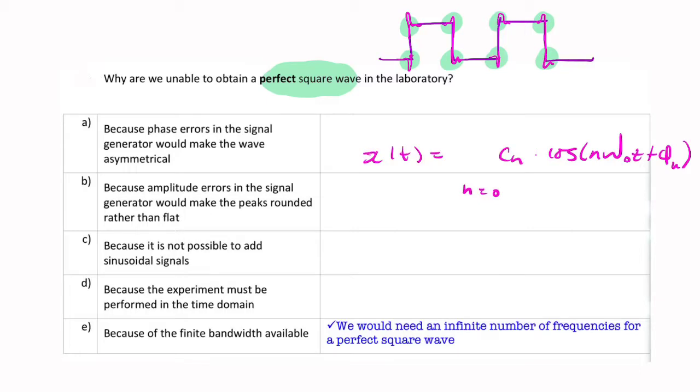The key thing here is we need an infinite number. So if we're limited, if we only have a finite number of components we can add together, possibly because we only have a finite bandwidth, then we're unable to produce this. So we end up with this distortion which we call Gibbs phenomenon.